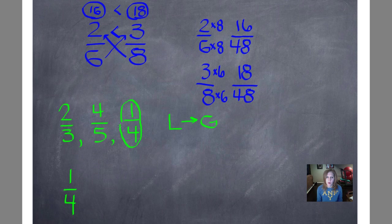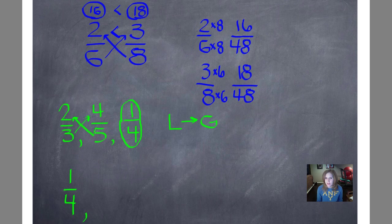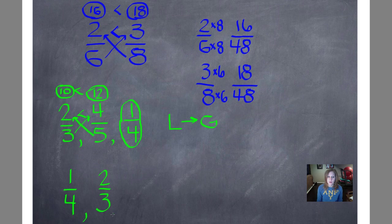I'm going to put a circle around this because I've already used it. I'm now comparing these two fractions — both of them will come after one-fourth. So I'm going to cross-multiply. Three times four is twelve — circle it. And five times two is ten. Twelve is greater than ten, so I know four-fifths is greater than two-thirds. So when I order them, I'll write two-thirds, and then four-fifths. When you're in doubt, check it out — you can always check it out by cross-multiplying.